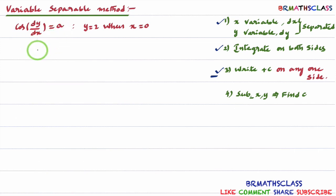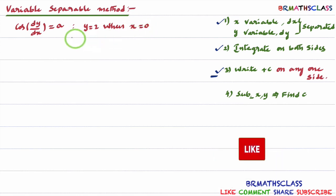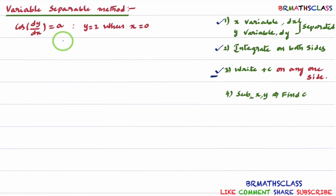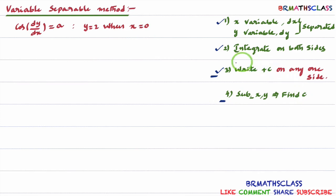Find the particular solution of the differential equation: cos(dy/dx) equal to a, when y equal to 2 and x equal to 0. As discussed in the previous problem, to find the particular solution, first we will find the general solution. After finding the general solution, we will substitute the given x values and y values in the general solution to find the value of c.